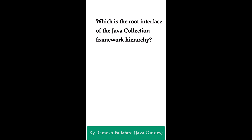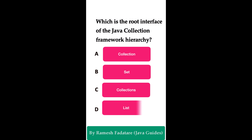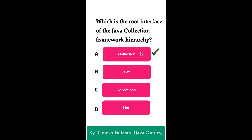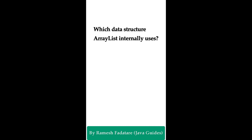What is the root interface of the Java Collection Framework hierarchy? Option A: Collection interface. Option B: Set interface. Option C: Collections class. Option D: List interface. The correct answer is the Collection interface. In the Java Collections Framework, the Collection interface is the root interface of the hierarchy. Other interfaces like List, Set, and Queue extend the Collection interface, which defines all the common methods.